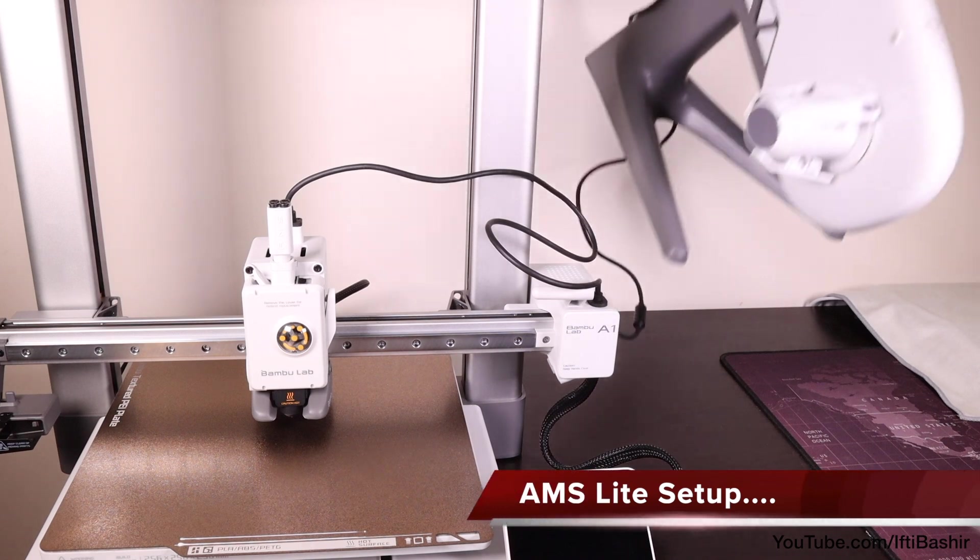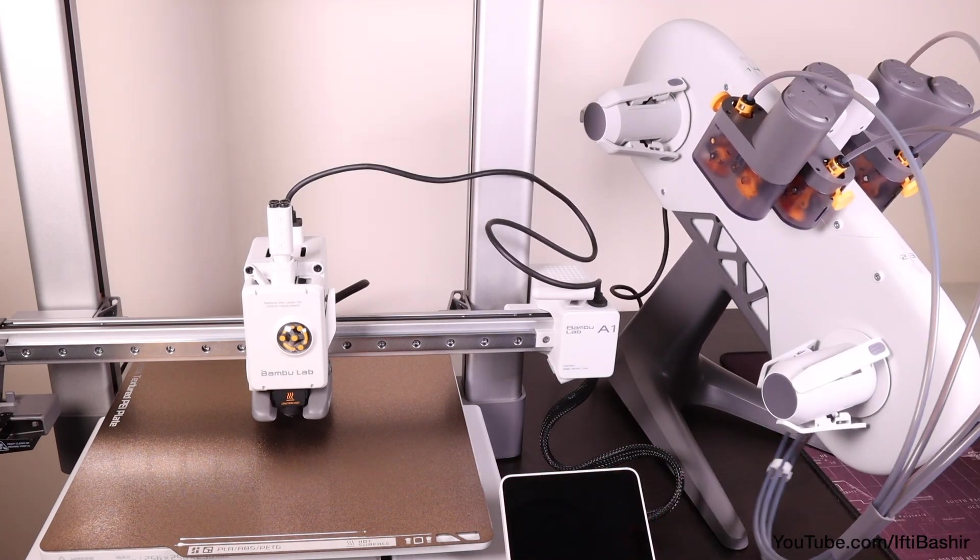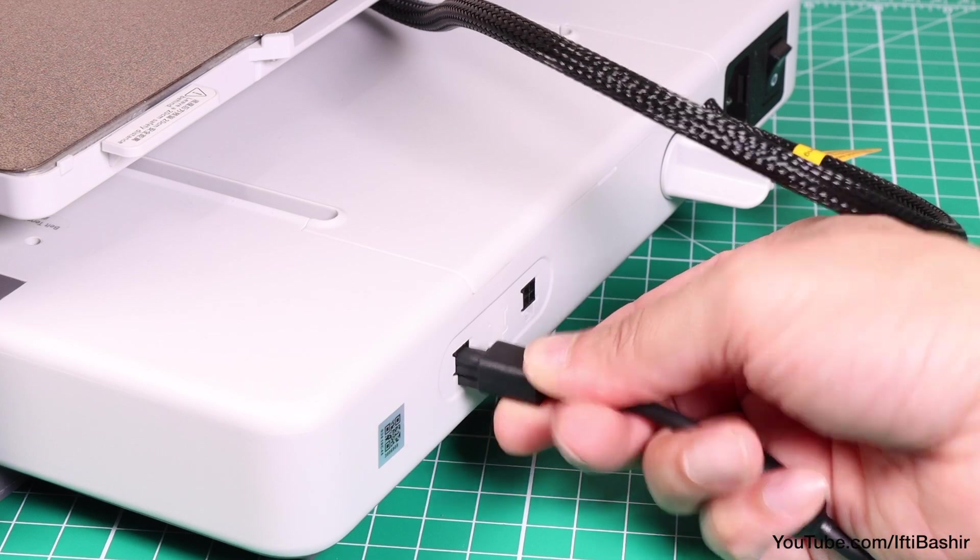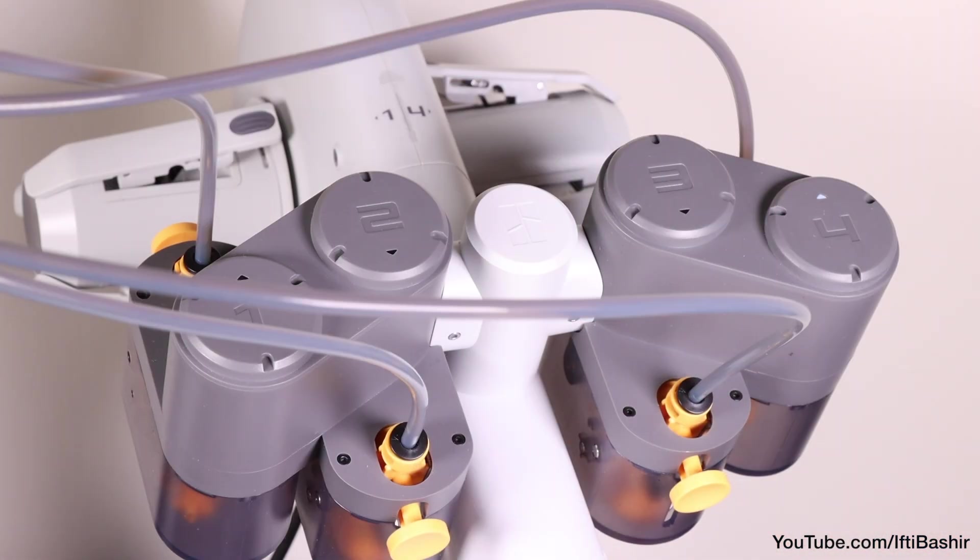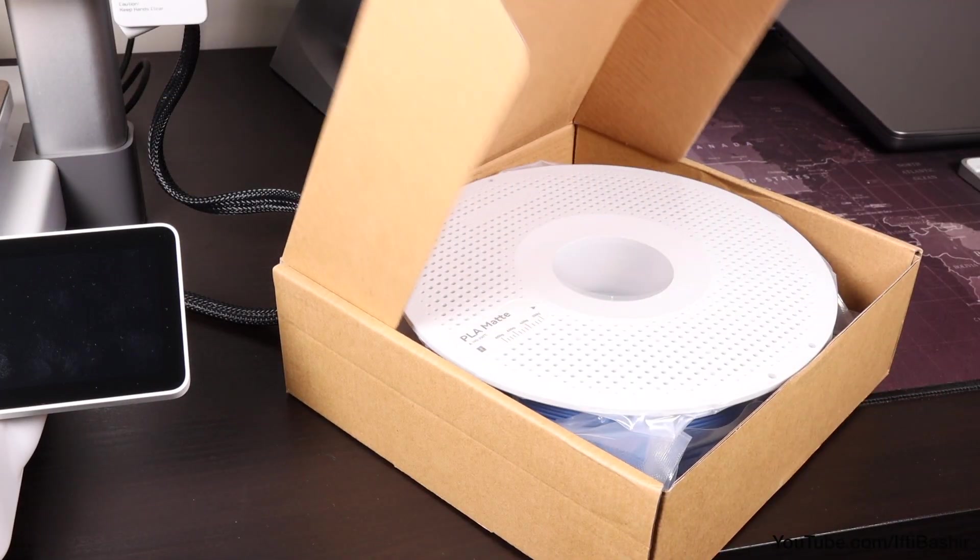Anyways now we know our printer is working perfectly well we can proceed to move across to the AMS light unit and once connected back up we can load our spools of filament.